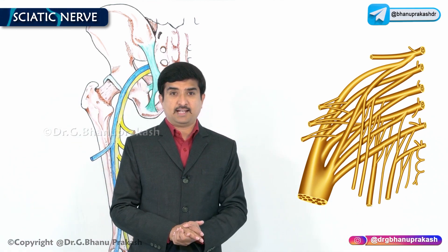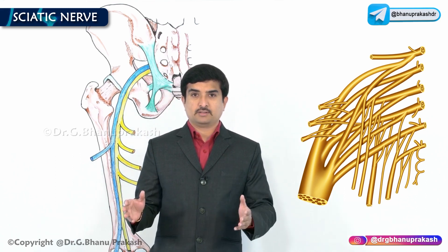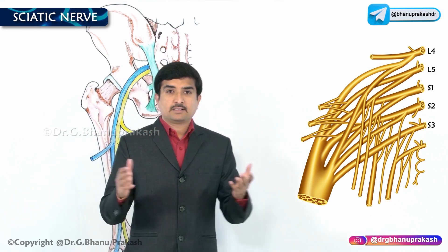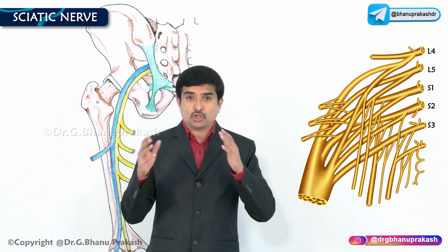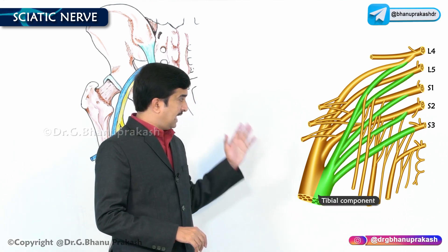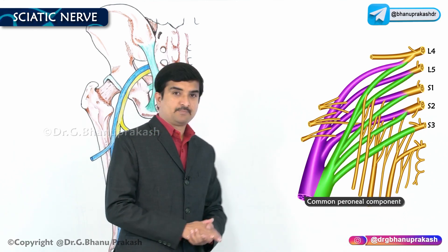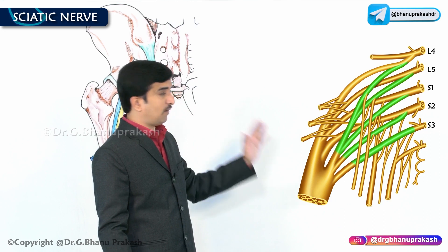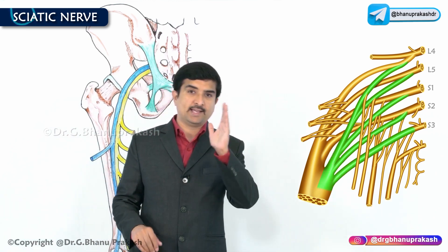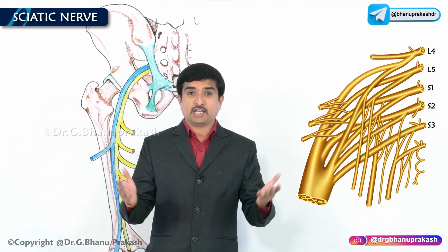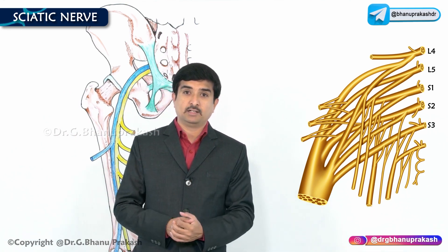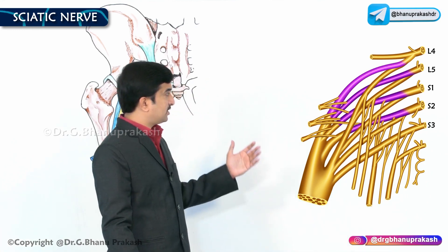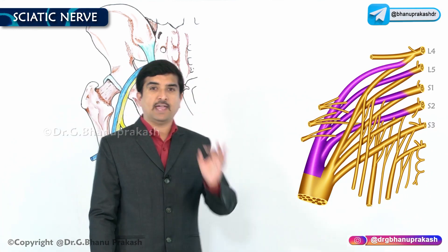The origin of the sciatic nerve is from the ventral rami of L4 to S3 nerves. The sciatic nerve has two components: one is a tibial component and second is a peroneal component. The tibial component is formed from the ventral divisions of the ventral rami of L4 to S3, while the common peroneal component is formed from the dorsal divisions of the ventral rami of L4 to S2.